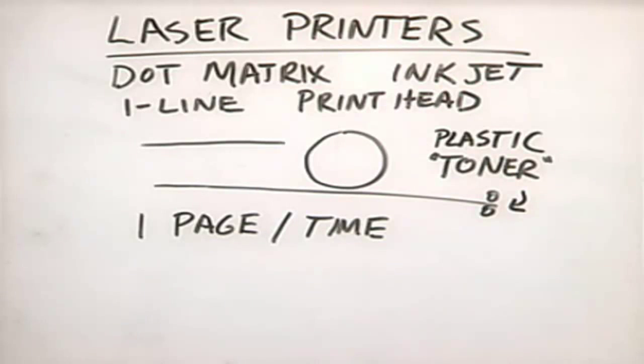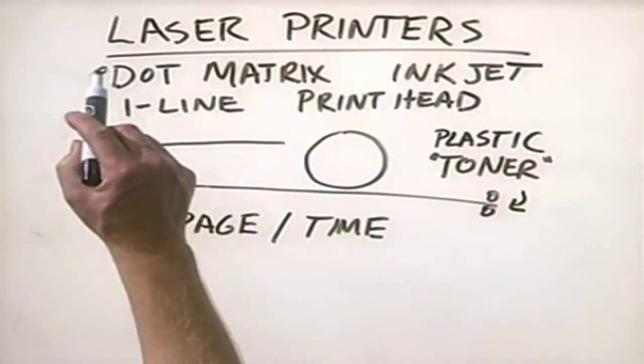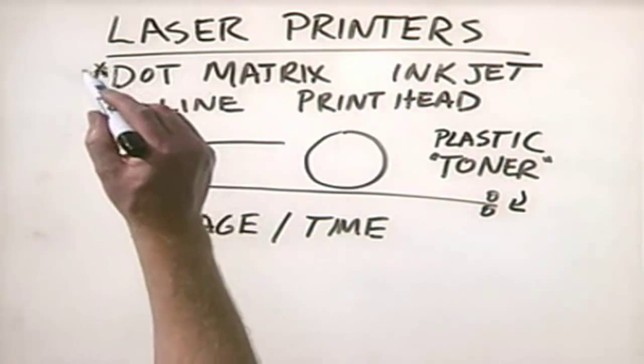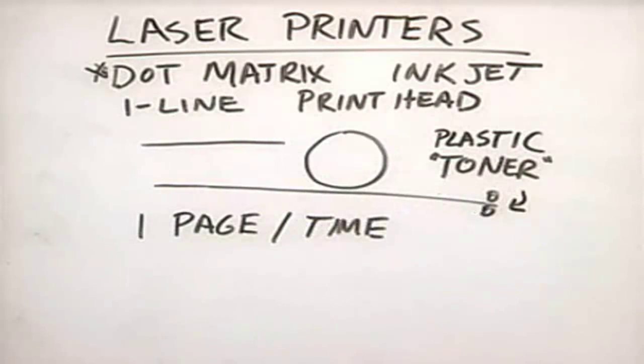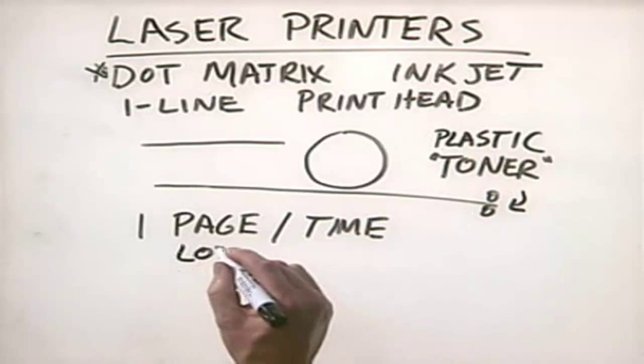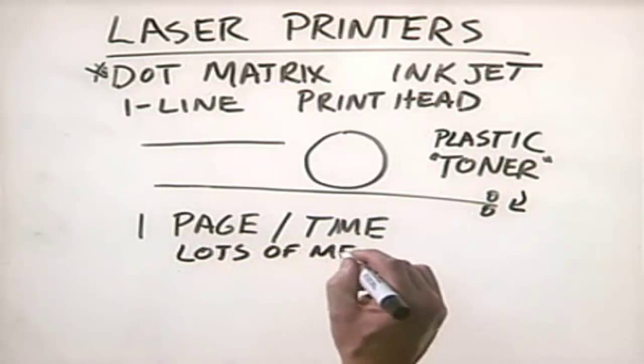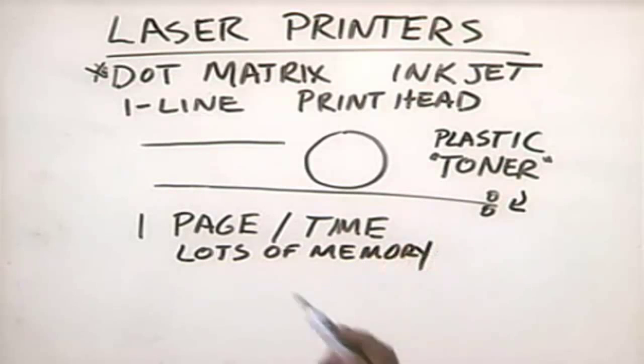Dot matrix and inkjet printers have very little memory because they only have to remember one line of data at a time as that print head goes across. Laser printers on the other hand have to have lots of memory because instead of just remembering one line at a time of data to be printed, they have to remember many lines of data at a time, an entire page.